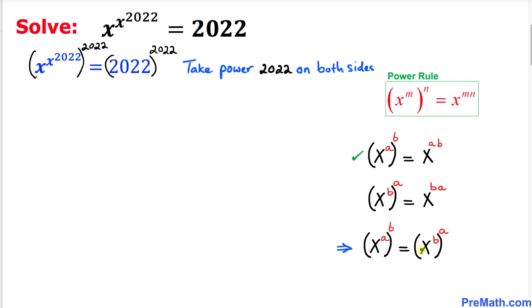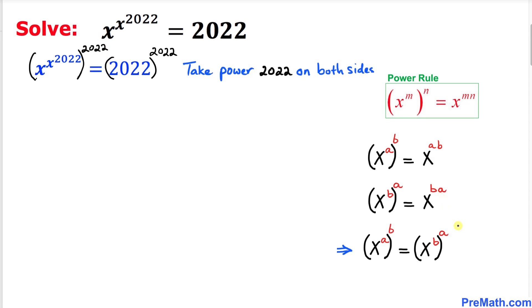Now let's revert back our attention to our original equation. If I set this part as an a and this part as a b, then by using this fact...